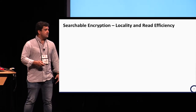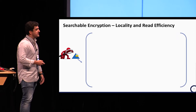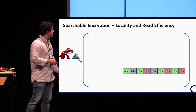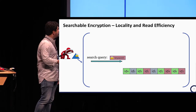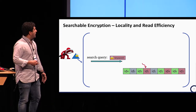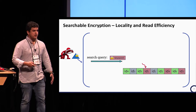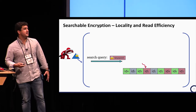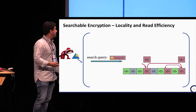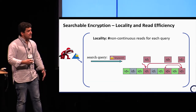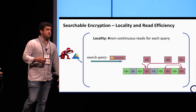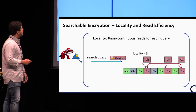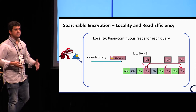Let's focus on the index. Most existing works store the index so that, given a search query, the server can retrieve the result by jumping to the first memory location containing the first piece of the result, then to the second, then to the third. We define locality as the number of non-continuous reads per query. In this example, locality is three because the server performs three random jumps.